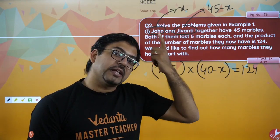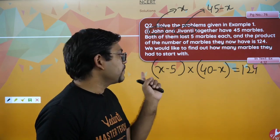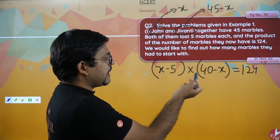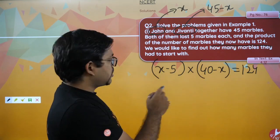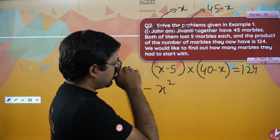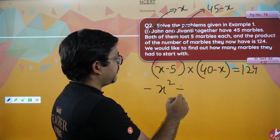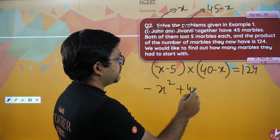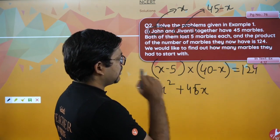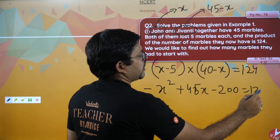Multiply: x into 40 minus x. This gives minus x squared plus 40x, and with the expansion you get plus 45x minus 200, which equals 124.